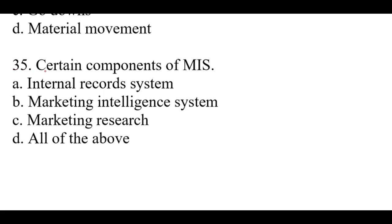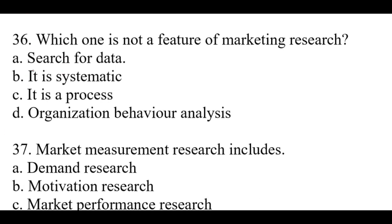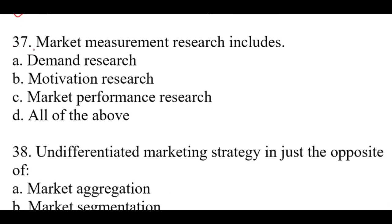Question number thirty-five: Certain components of MIS — right option is D, all of the above: internal records system, marketing intelligence system, and marketing research. Question number thirty-six: Which one is not a feature of marketing research? Right option is D: Organizational behavior analysis. Question number thirty-seven: Market measurement research includes — right option is D, all of the above: demand research, motivation research, and market performance research.